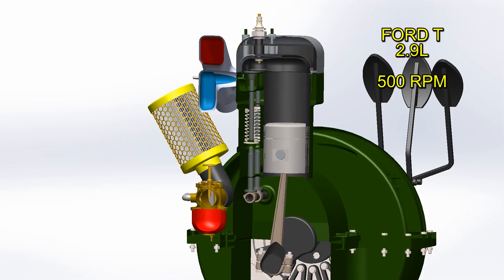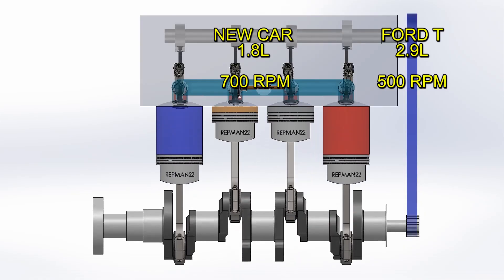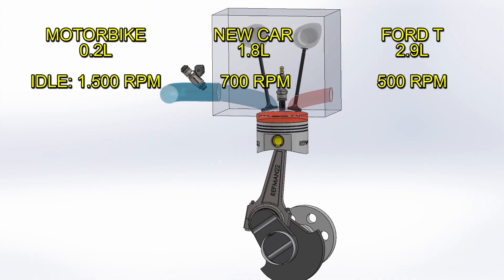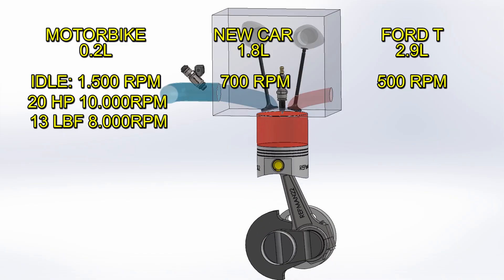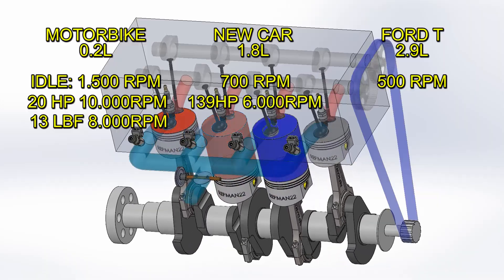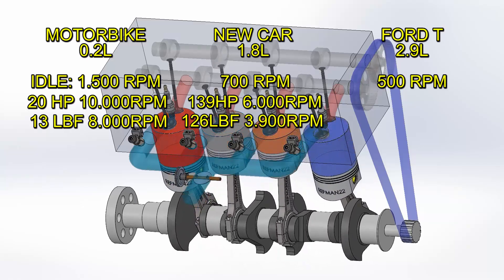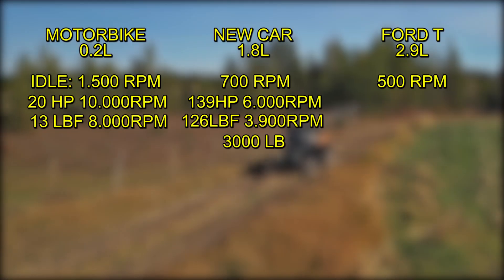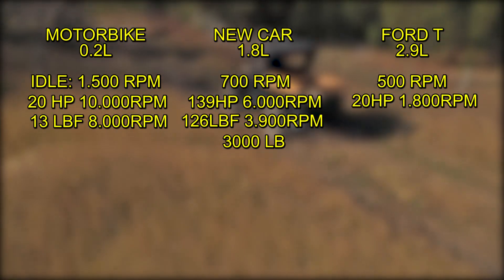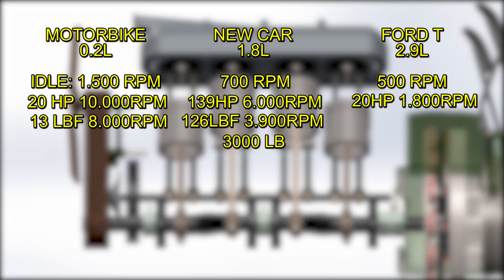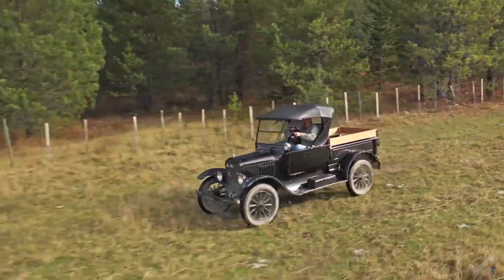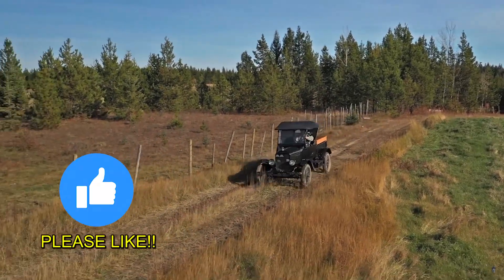A Ford T idles at 500 RPM, while a modern car idles between 700 and 1,000 RPM. For comparison, a cheap Chinese motorcycle engine of just 0.2 liters can produce 20 horsepower at 10,000 RPM and 13 foot-pounds of torque at 8,000. A Toyota Corolla uses a 1.8-liter engine spinning at 6,000 RPM, producing 139 horsepower and 126 pound-feet of torque at 3,900 RPM, and the car weighs 3,000 pounds. The Ford T, with its 2.9-liter engine, has 20 horsepower, rotates at 1,800 RPM, and has an outstandingly high torque of 82 foot-pounds at 900 RPM. It weighs just 1,200 pounds, and could exceed 40 miles per hour. With slight modifications — increasing compression and installing lighter modern parts — it can easily exceed 60 miles per hour.